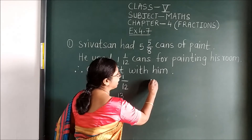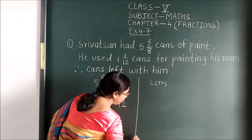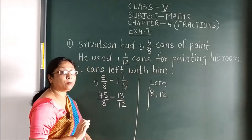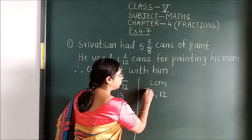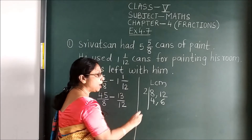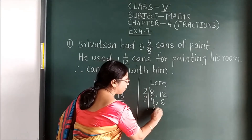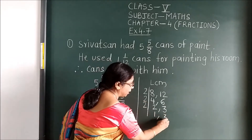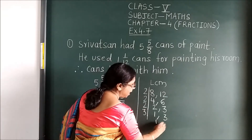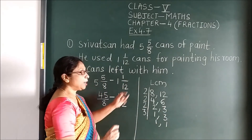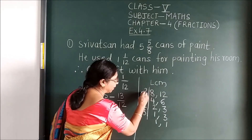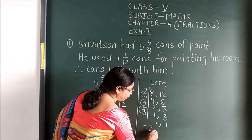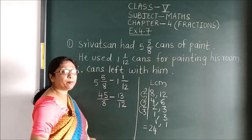You have to find the LCM of the denominators. To find LCM, you will use prime numbers. Dividing: 2 goes into 8 and 12; then 2 goes into 4 and 6; then 2 goes into 2, leaving 1 and 3; then 3 goes into 3, leaving 1 and 1. Multiplying: 2 × 2 × 2 × 3 = 24. So the LCM is 24.